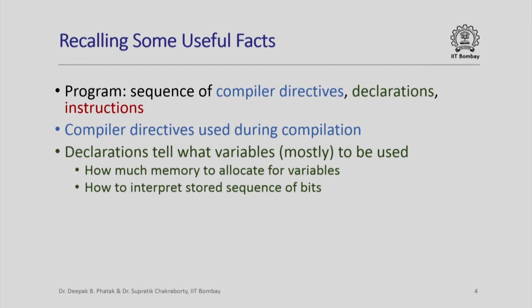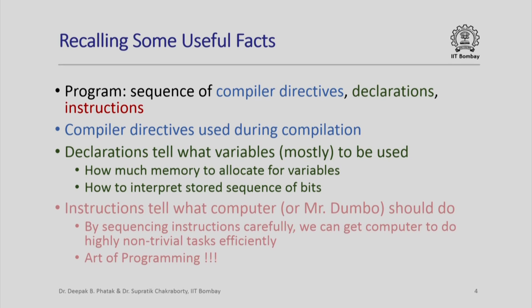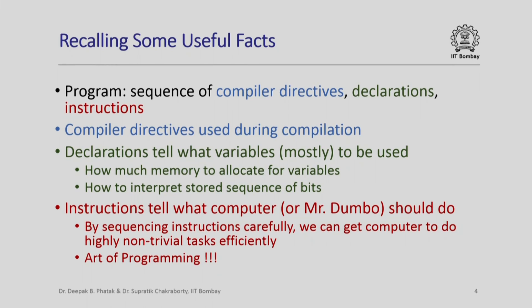For example, whether it is a signed integer or an unsigned integer or a floating point number — the compiler gets to know this information from the declarations. Instructions basically tell the computer, or Mr. Dumbo if you recall the Dumbo model of computing, what it should do.